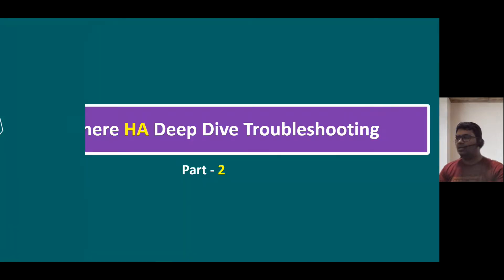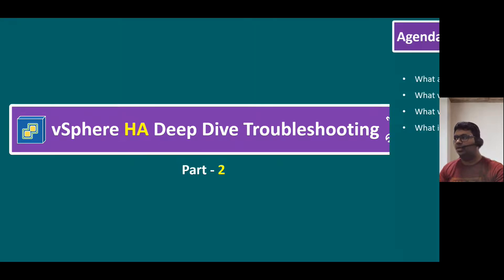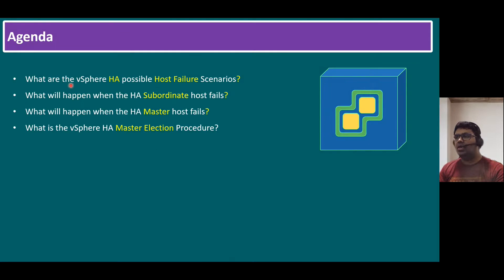Hi everyone, good morning. Welcome to Gnan Cloud Garage. In this session, I'm going to talk about vSphere HA Deep Dive troubleshooting part 2. Here is the agenda: what are the vSphere HA possible host failure scenarios, what will happen when your HA subordinate host fails, what will happen when the HA master host fails, and what is the vSphere HA master election procedure?